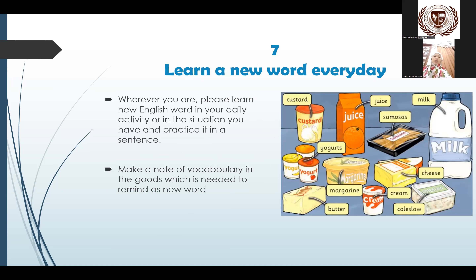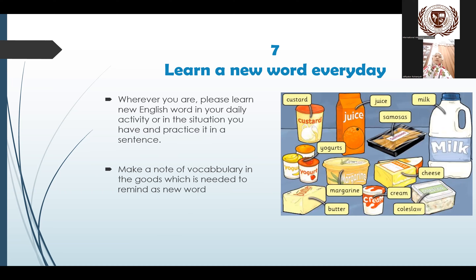Learn a new word every day. Wherever you are, please learn new English words in your daily activity or in the situations you encounter, and practice them in sentences. Make a note of vocabulary from the course which is needed to remember new words. For a basic speaker, this way can help you become fluent in speaking English, such as making a note or vocabulary label on each object in your home. For example, the door — write a note on it saying 'door.' Or on the window, write 'window.' So you can take a note labeling each object.